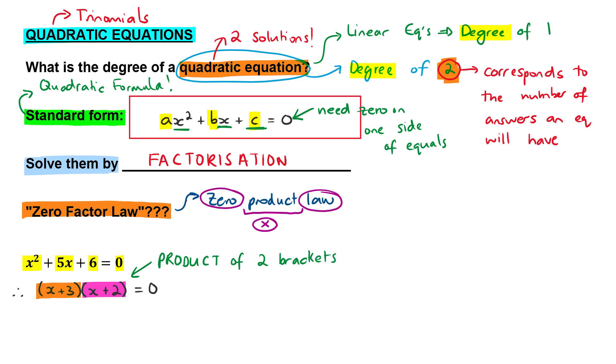Now why would I use a word like product over there? The reason I'm using that word is because it directly relates to that zero product law. And what it means is that there's our first product and there's our second product. Or there's our first factor and there's our second factor.